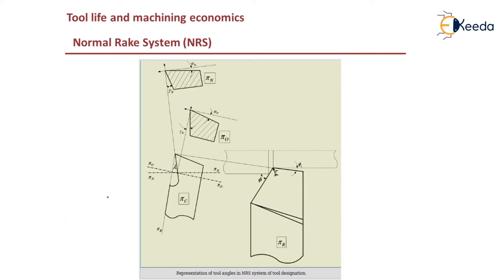In the diagram you can see the different planes: reference plane Pi_r, cutting edge plane Pi_c, and Pi_n — which replaces Pi_naught used in ORS and need not be perpendicular to Pi_c or Pi_r. The normal rake angle gamma_n is the angle of orientation of the tool rake surface from the reference plane Pi_r, measured on the normal plane. The inclination angle lambda is the angle of inclination of the tool's principal cutting edge from Pi_r, measured on the cutting edge plane Pi_c.